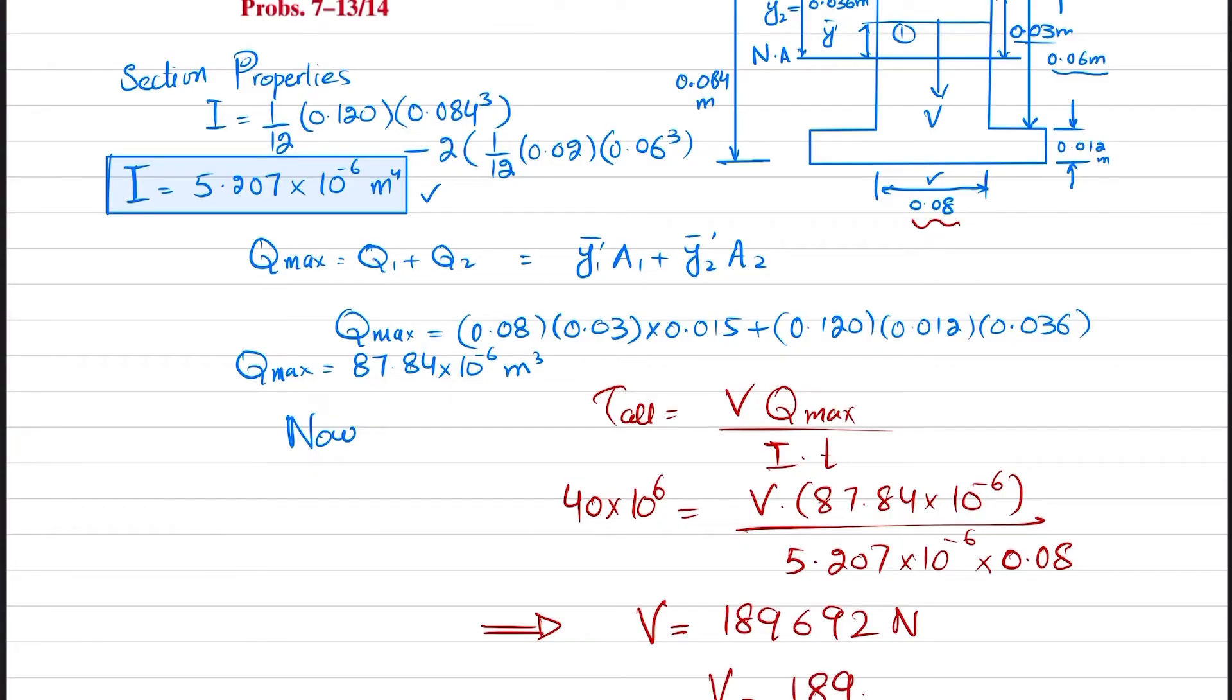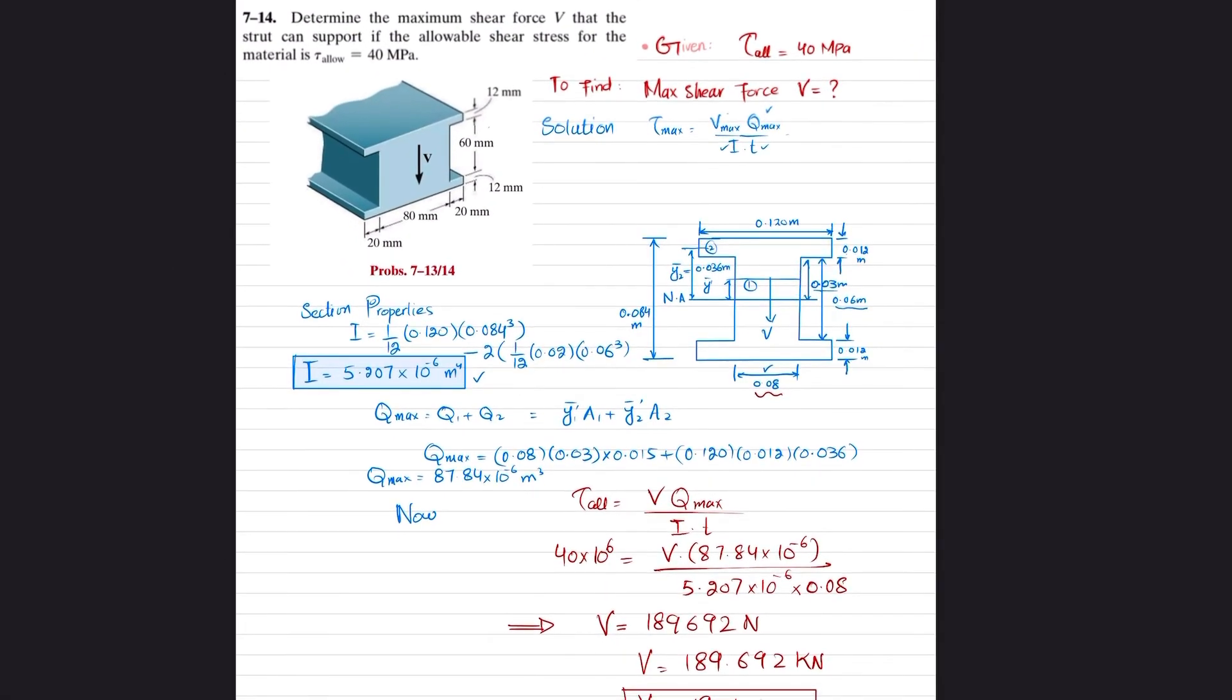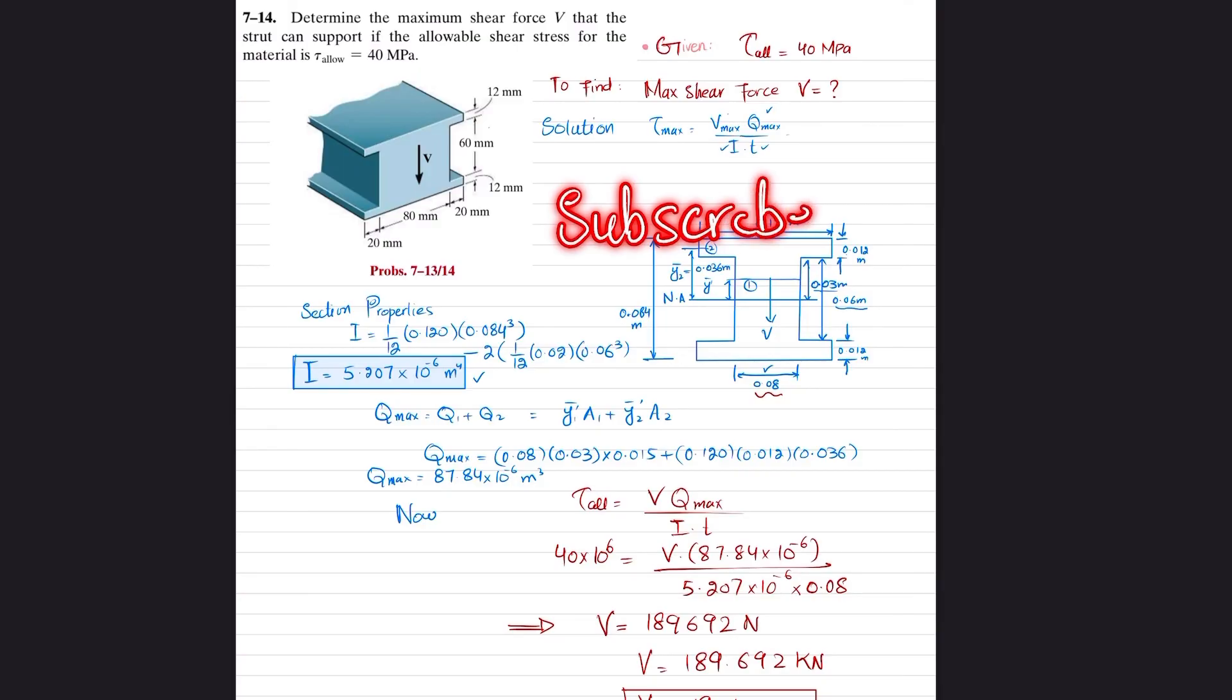V equals 189.692 kilonewtons. This is the answer to question 7-14. I hope you understand. For those who are new to my channel, please subscribe and hit the bell icon so you can get notifications about the latest videos. Thank you for watching.